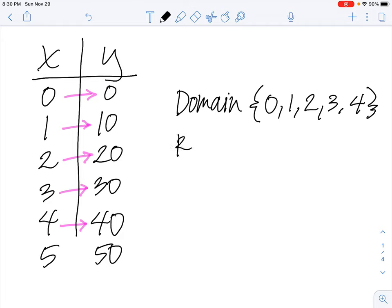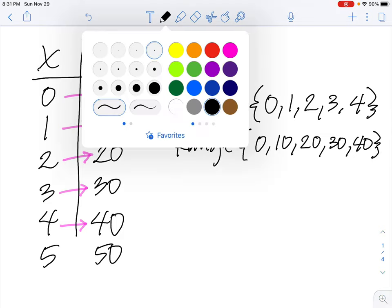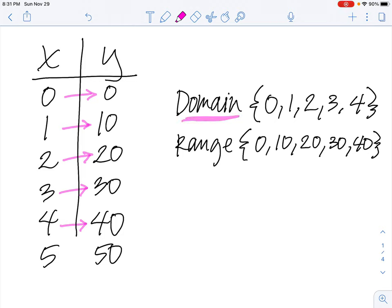And the range of my function, also inside a bracket: 0, 10, 20, 30, 40, and so on and so forth. Right? So we can see, again, there's those terms coming up, domain for the x values, and range for the y values.